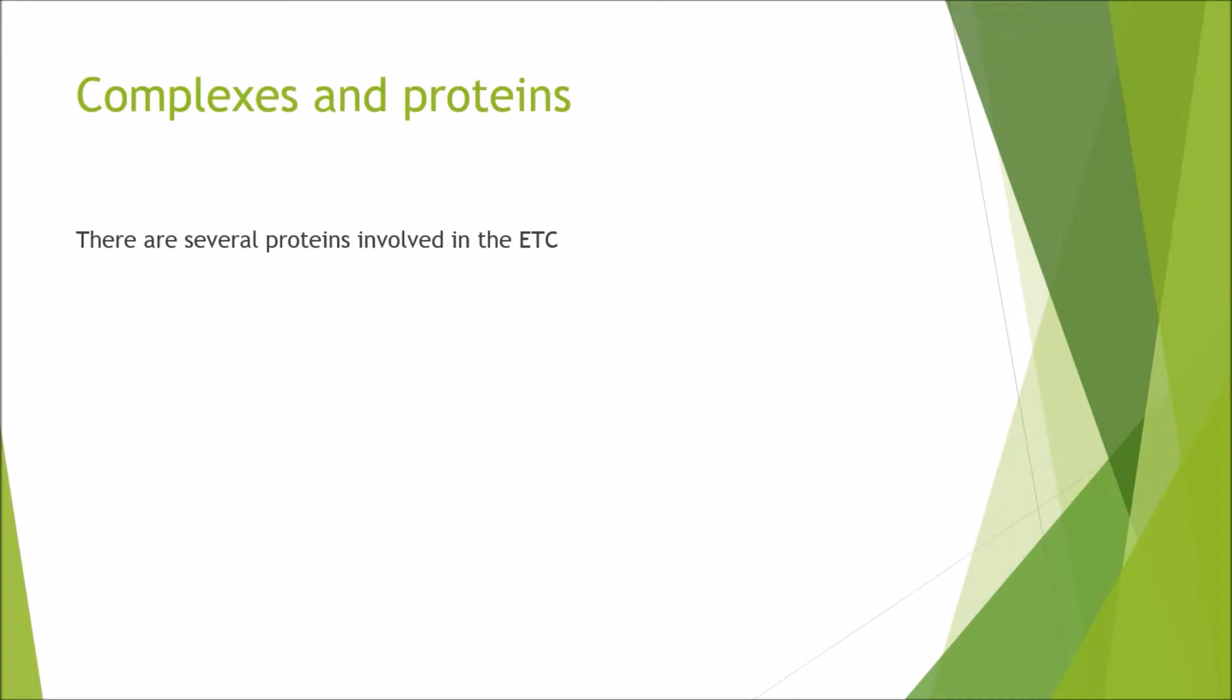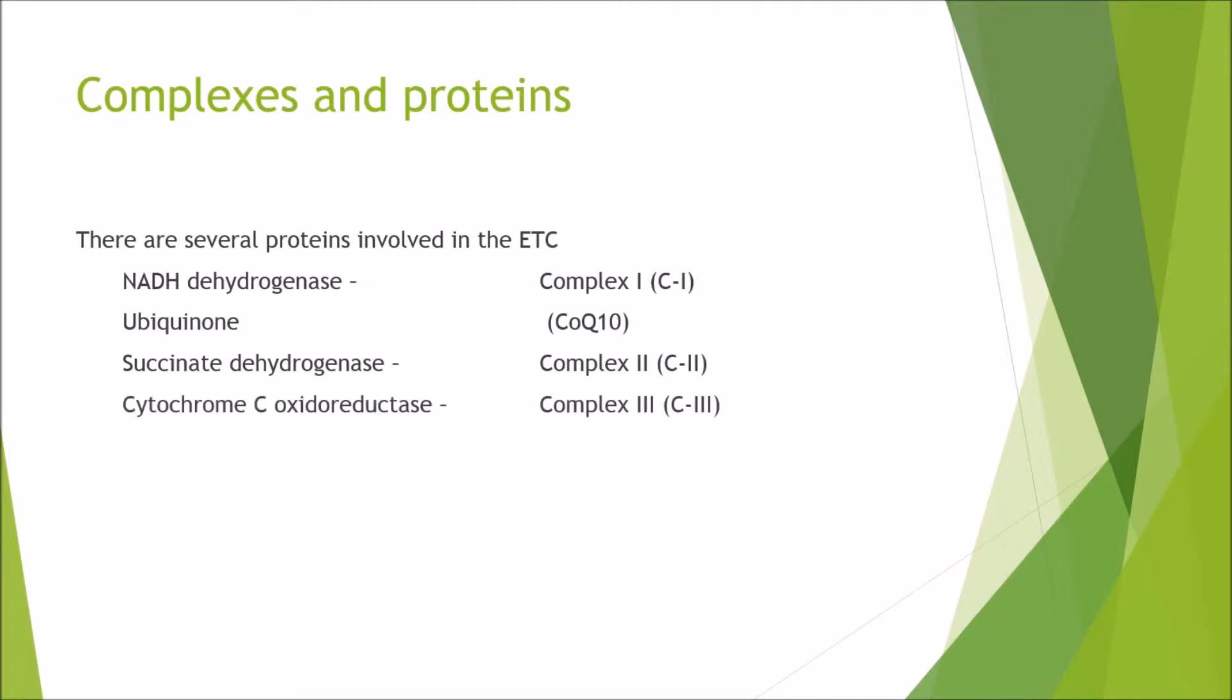To start off with there are several proteins involved in the electron transport chain. We have NADH dehydrogenase, which is abbreviated to complex 1 or C1. There's also ubiquinone, which is also known as coenzyme Q10 or coenzyme Q. Then we've got succinate dehydrogenase, which is complex 2 or C2. Cytochrome C oxidoreductase, which is complex 3 or C3. Cytochrome oxidase, which is complex 4 or C4. And then there is ATP synthase, which is sometimes abbreviated to complex 5 or C5.